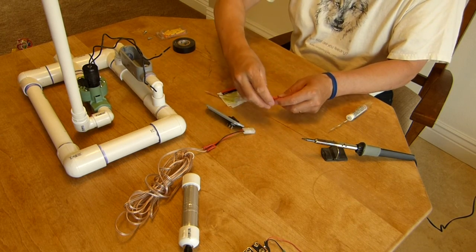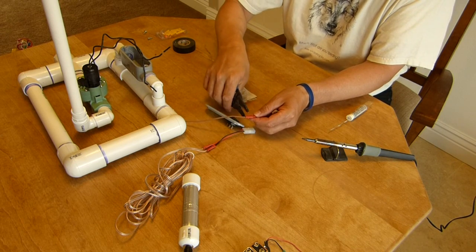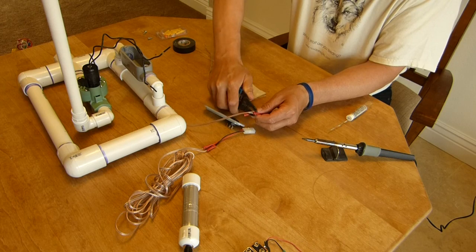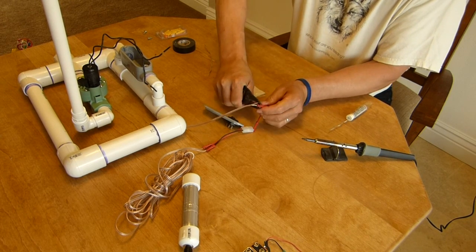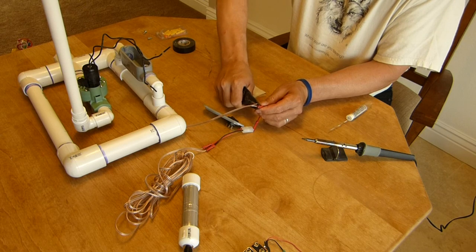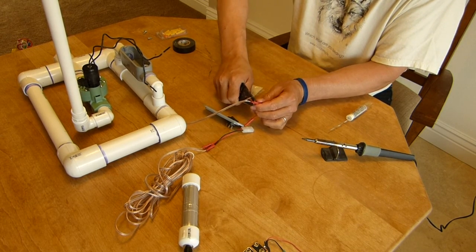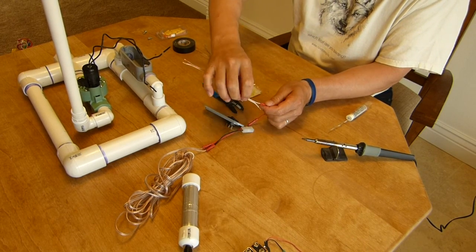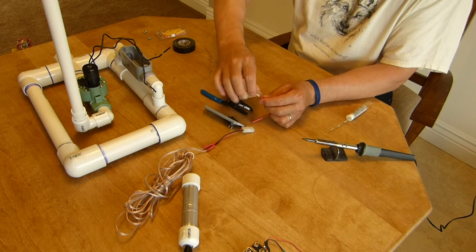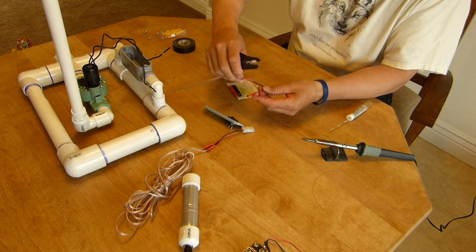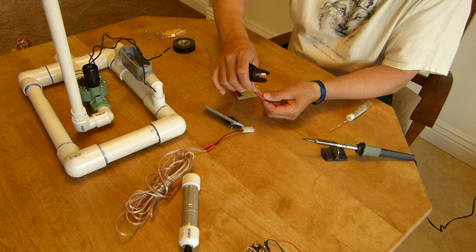And I will just take and crimp that on real good. And I'll take this one and put the red wire, which is the clear side of the speaker wire, right in there and crimp it.